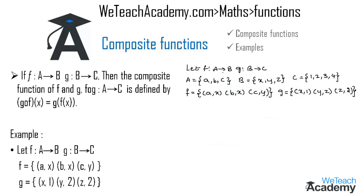Let me explain this concept with an example. Let f be the function from A to B and g be a function from B to C. The elements of set A are {a, b, c}, the elements of set B are {x, y, z}, and the elements of set C are {1, 2, 3, 4}. The ordered pairs of f are (a, x), (b, x), (c, y), and the ordered pairs of g are (x, 1), (y, 2), and (z, 2).